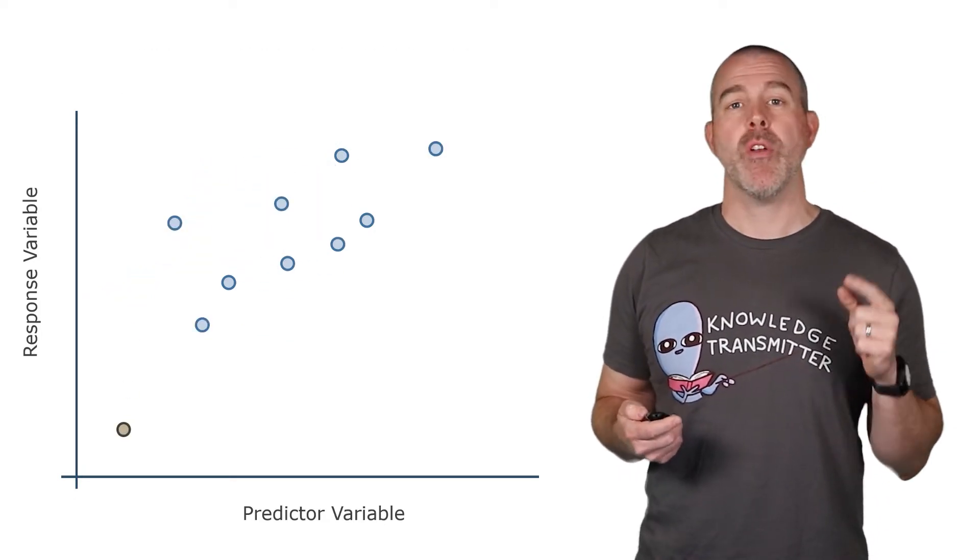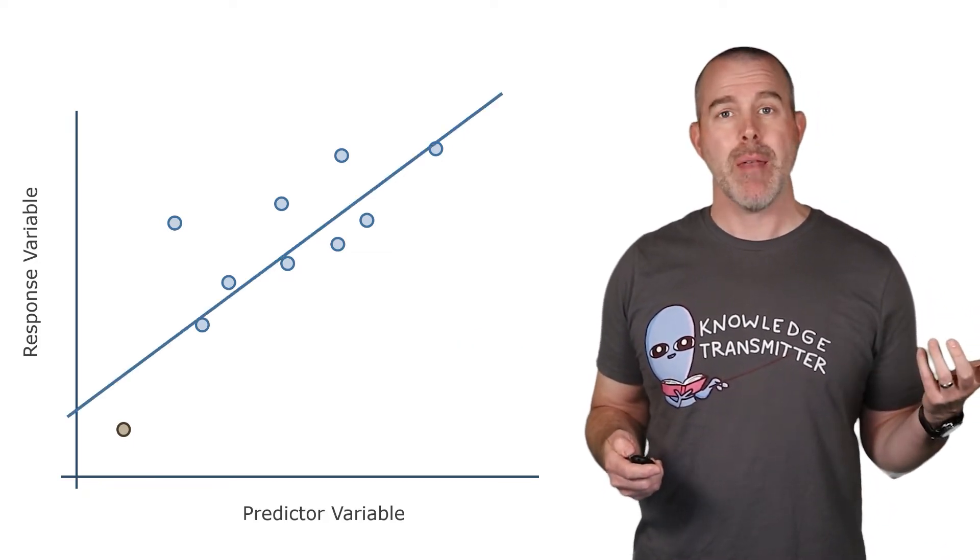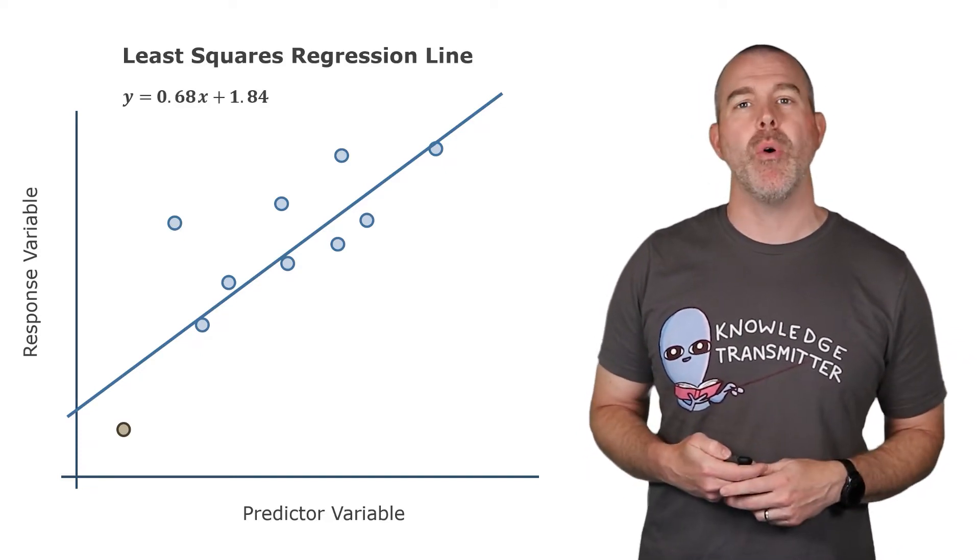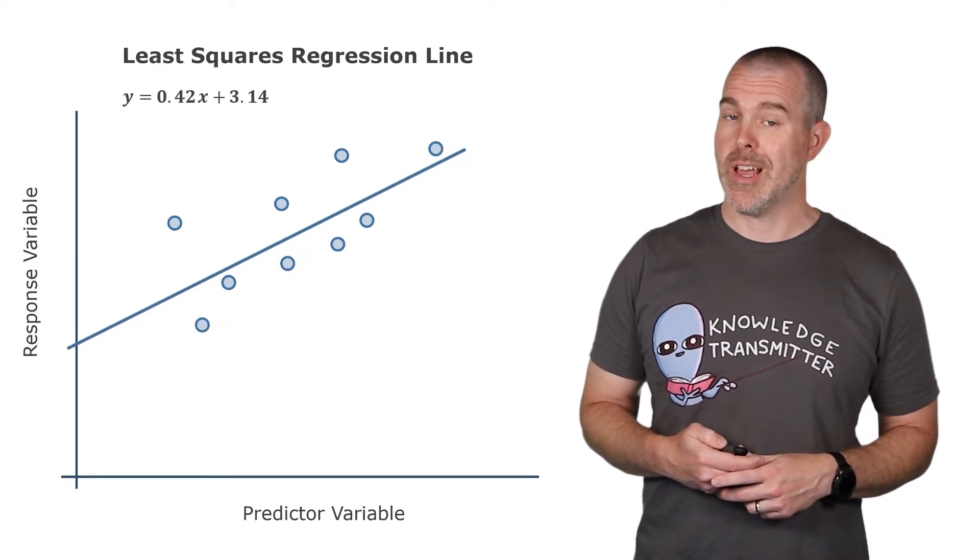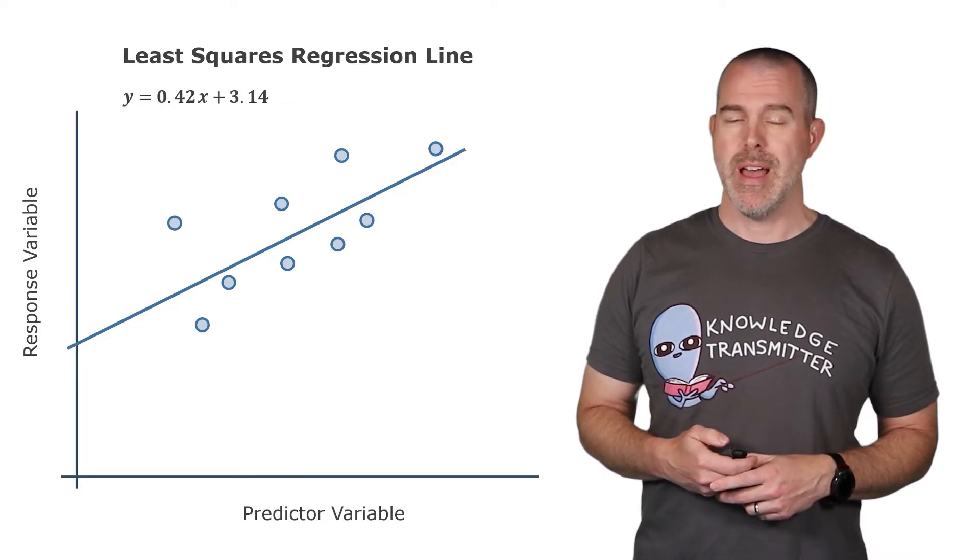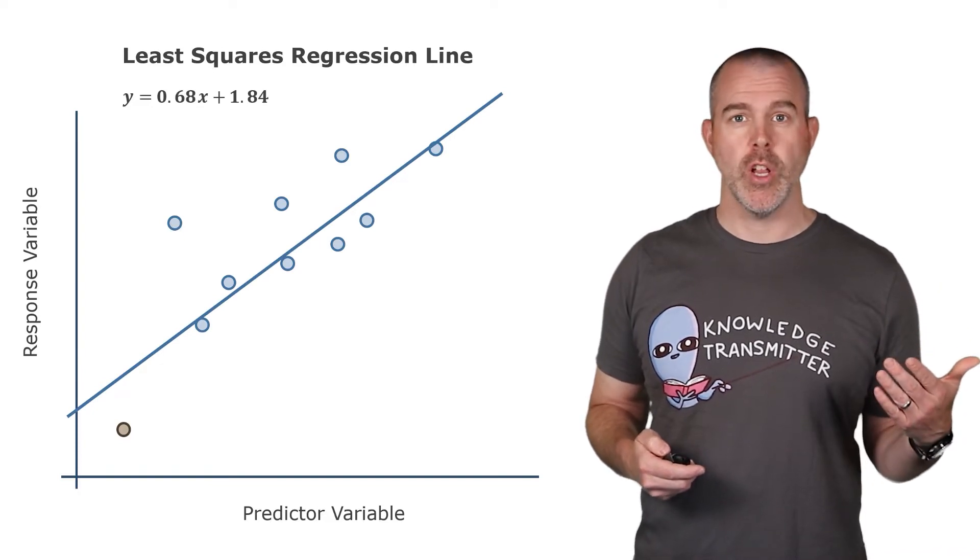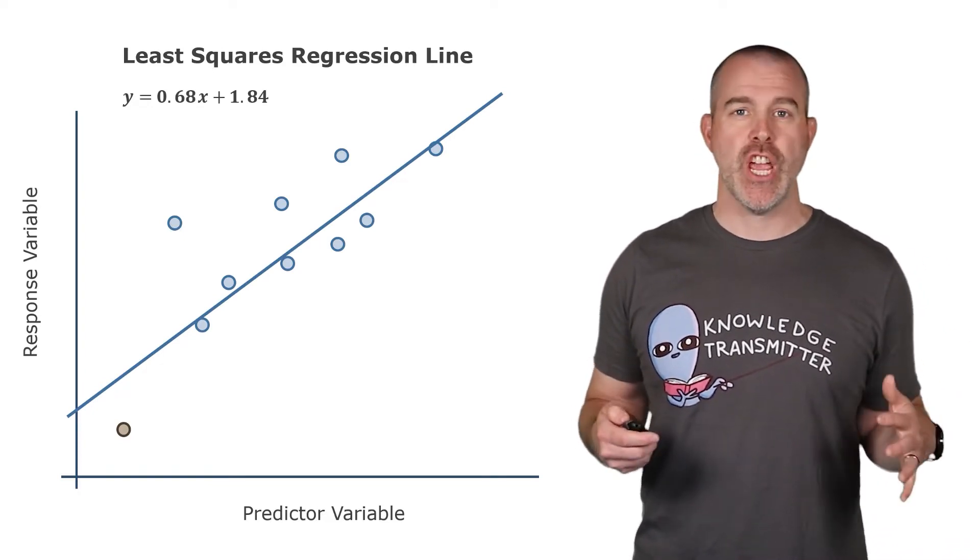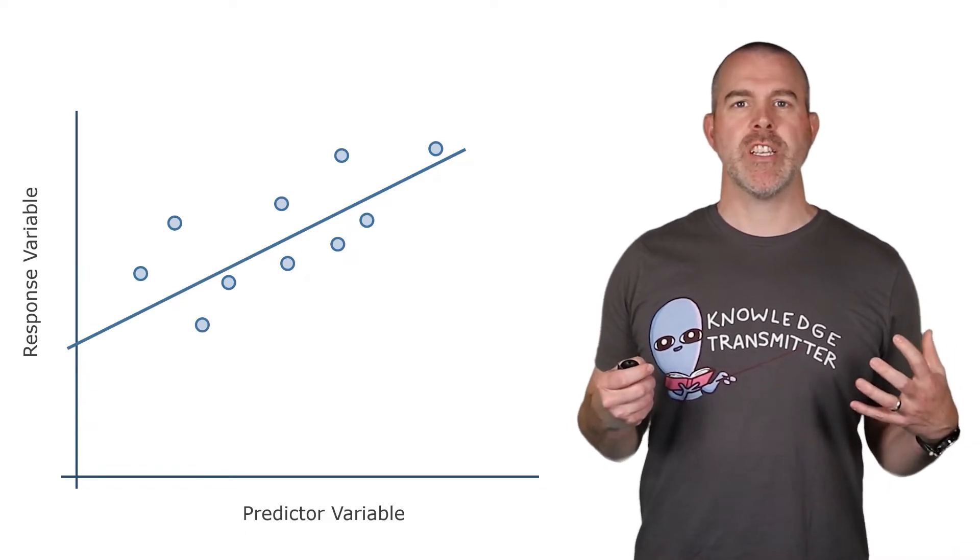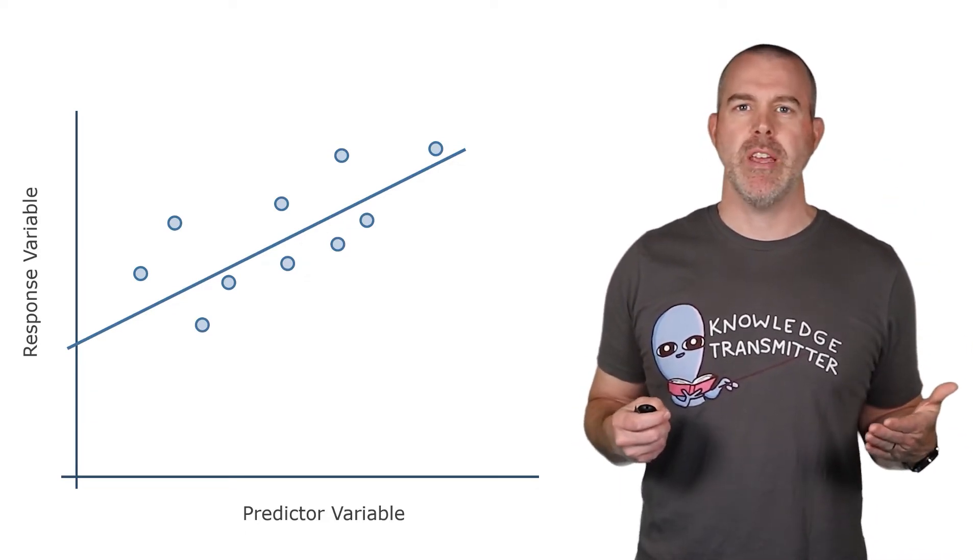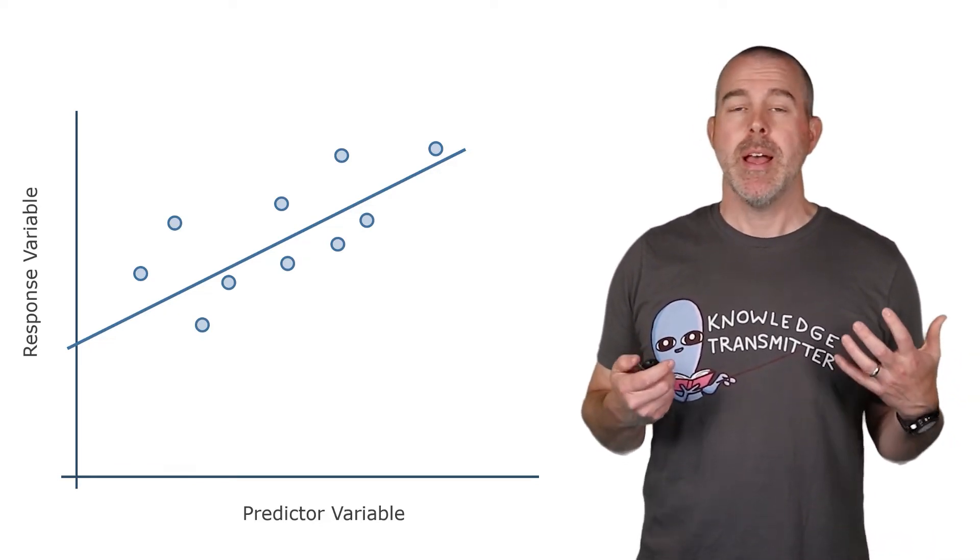Last example, what if we have one way over on that bottom left? Here's the line with that point, slope of 0.68, 1.84 is the y intercept, and then if we take it out, look at the change now, like about a 50% drop in the slope, big change in the y intercept. So that one is influential, because taking it out significantly changed the slope and y intercept of the equation for the least squares regression line. This is the most challenging, because there's no hard line for what it means to be influential. It's kind of like a statistician's judgment about whether this is influential or not.